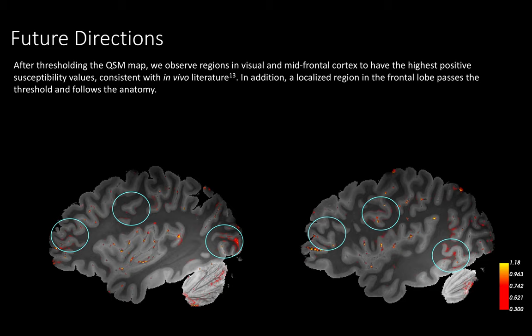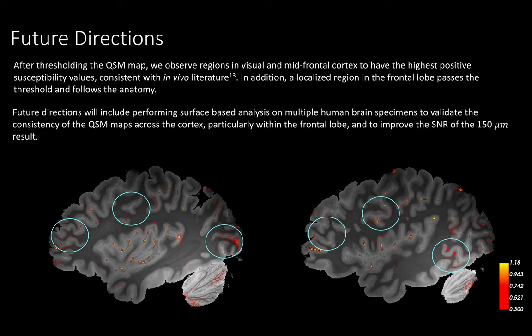Future directions will include performing surface-based analysis on multiple human brain specimens to validate the consistency of the QSM maps across the cortex, particularly within the frontal lobe, and to improve the SNR of the 150 micron result.